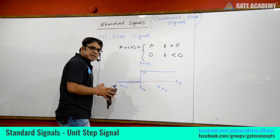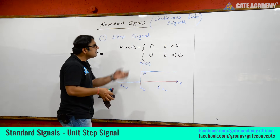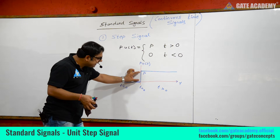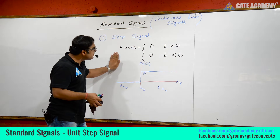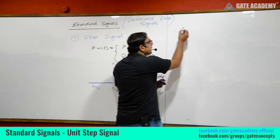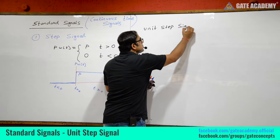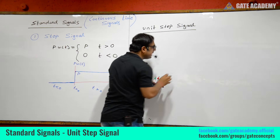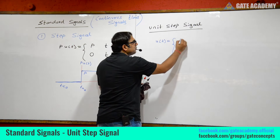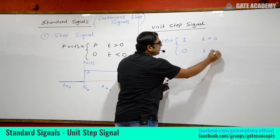This is a standard signal called the unit step signal. When will we call a step signal a unit step signal? When the magnitude of the step is unity. So the unit step signal is a step signal whose magnitude is unity, defined as: u(t) = 1 for t greater than 0, and u(t) = 0 for t less than 0.